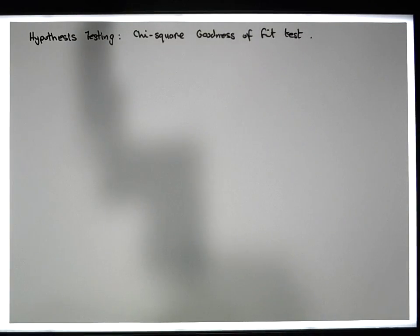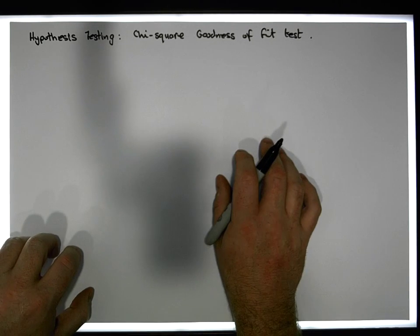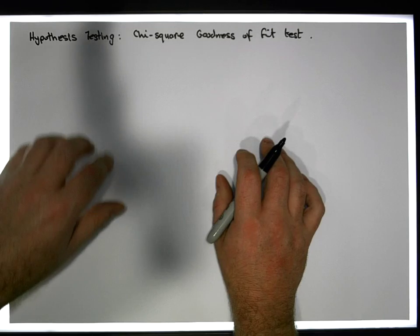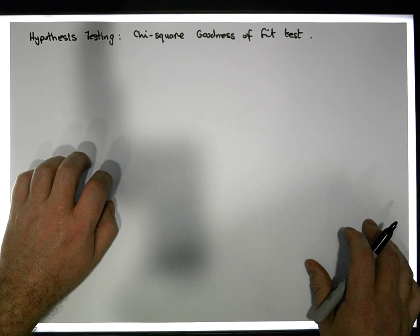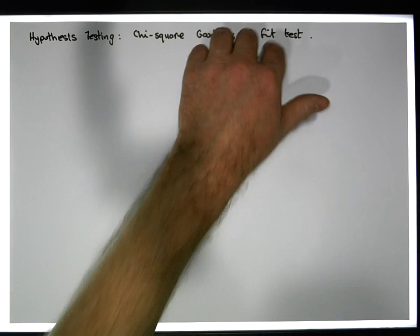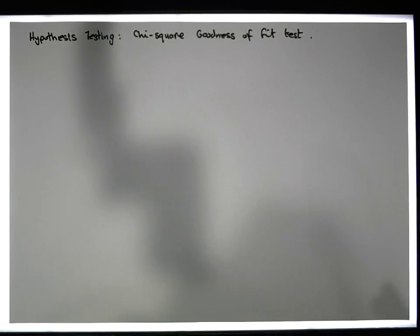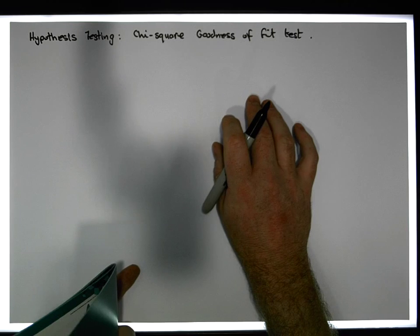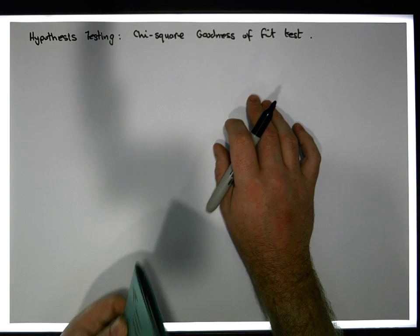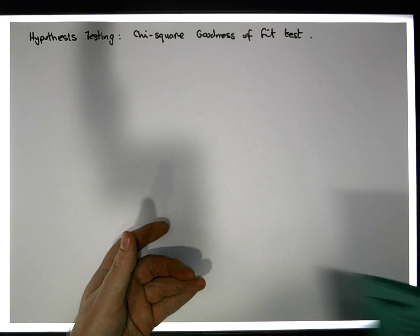Hi guys, this is Jonathan Lambert with the Mathematics Development and Support Service at the National College of Ireland. This short video in our series on hypothesis testing is going to concentrate on what's known as the chi-squared goodness of fit test. This is a special type of hypothesis test that allows us to determine whether a set of observed frequencies follow a particular distribution.